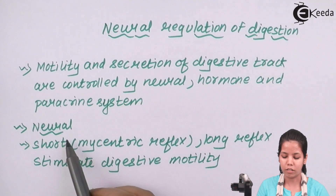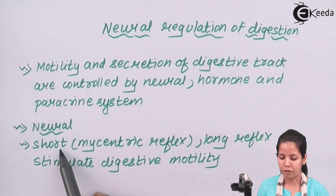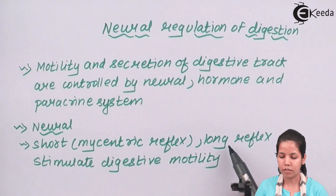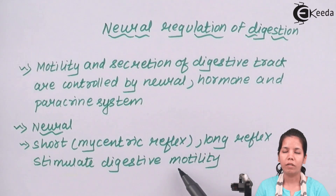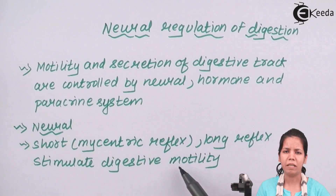Neural regulation helps in the digestion process through short reflexes — also called myenteric reflexes — and long reflexes, which stimulate digestive motility. Together, this is controlled by the CNS, PNS, or ANS system.